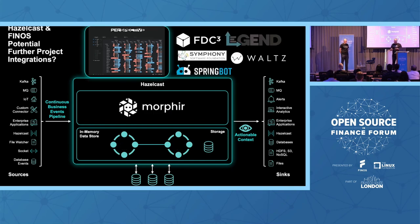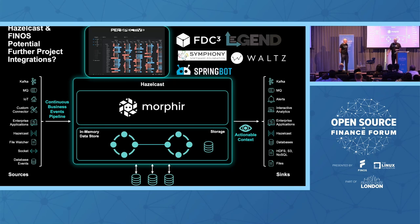We're also going to start looking at other FINOS projects. I didn't really understand Legend until I just attended their talk, and I'm keen to have it as a data source. We're also used with chatbots to provide AI-driven real-time conversational banking and customer engagement, so we're intrigued by integrating with the Symphony platform. We're looking for more ideas and definitely going to look at how we could allow More Fair rules to be executed within the Hazelcast runtime with our speed and performance.